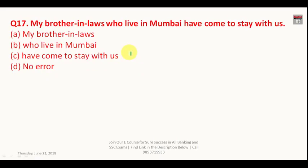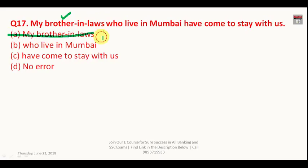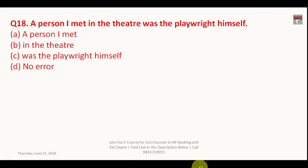Question number seventeen: 'My brother-in-laws who live in Mumbai have come to stay with us.' The compound noun formation is wrong here. When making compound nouns plural, you add 's' to the main word. The main word is 'brother,' so the correct form is 'brothers-in-law,' not 'brother-in-laws.' The answer is A.